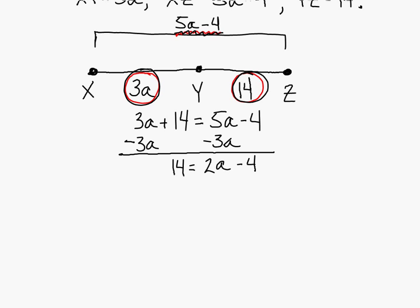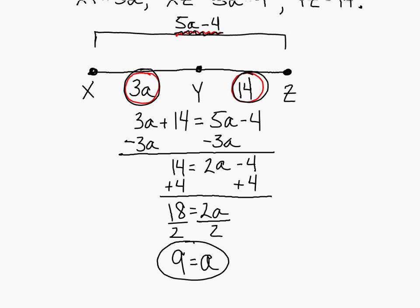What would you do next? Add 4 to each side. Good. So 18 equals 2A. What would you do next? Divide by 2. Divide by 2. Good. And 9 is equal to A. So there's the first answer in the question. They asked you to find A. A is equal to 9.